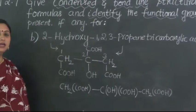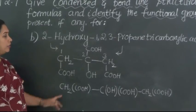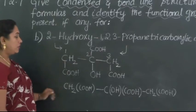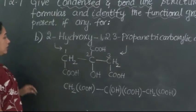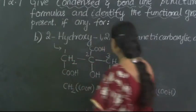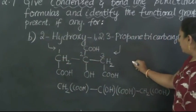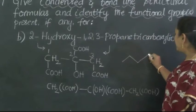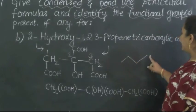Now, based on this, we are supposed to write the bond line formula. How would be the bond line formula for this particular structure? Let us write it here. One, two, three - three carbon atoms are fixed.